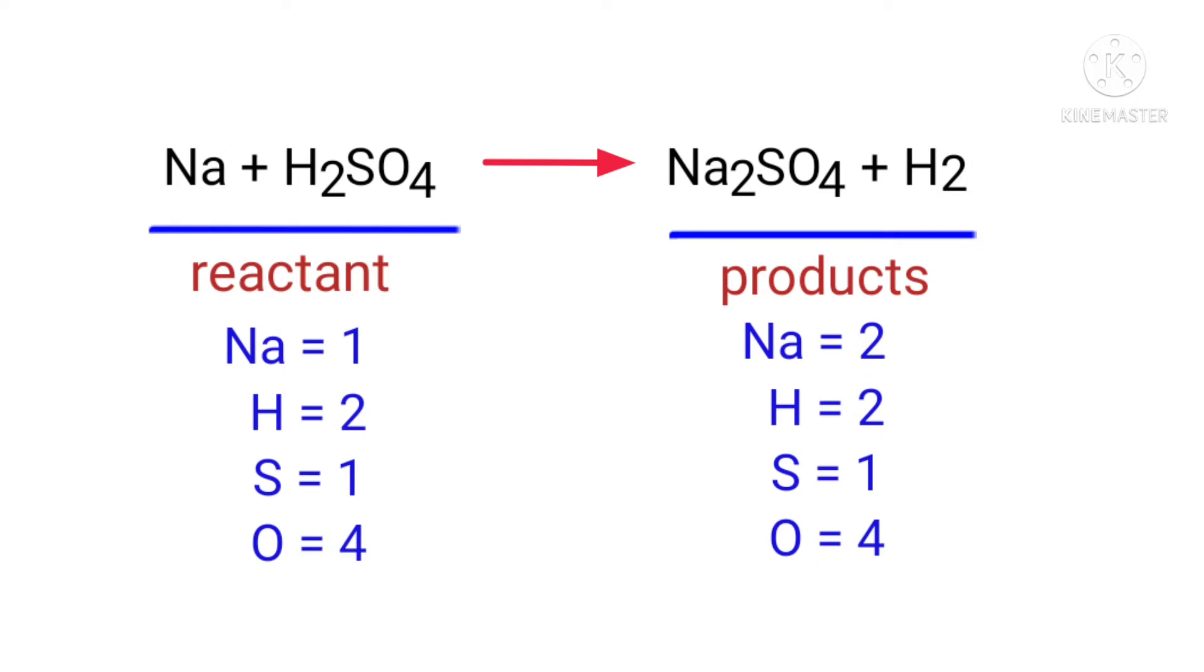To balance the chemical equation, we need to make use of coefficients. A coefficient is a number that we place in front of a chemical formula.